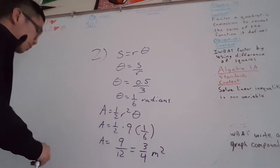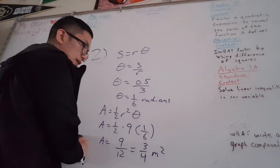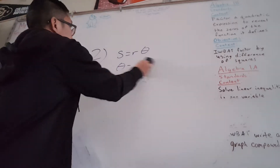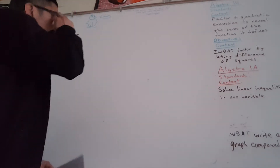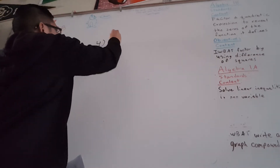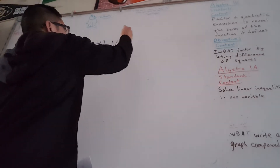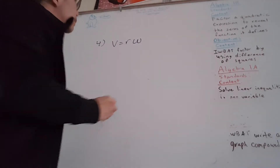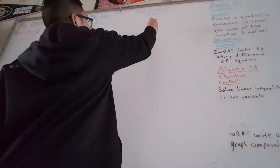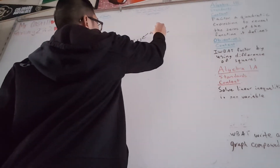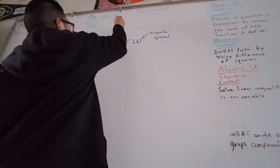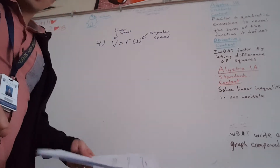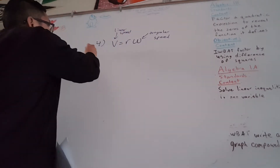Now for number four. Number four is asking for the linear speed of an object moving. So if they're asking for linear speed, we need the relation that linear speed is the radius of a circle times the angular speed. Remember this is angular speed, and V here stands for linear speed. So I know it's going at 480 revolutions per minute.